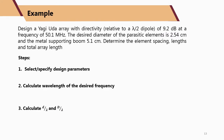Let's look at an example: design a Yagi-Uda array with directivity of 9.2 dB relative to a lambda/2 dipole at a frequency of 50.1 MHz. Step 1: specify design parameters. The desired parasitic element diameter is d = 2.54 cm, and the metal supporting boom diameter is D = 5.1 cm.